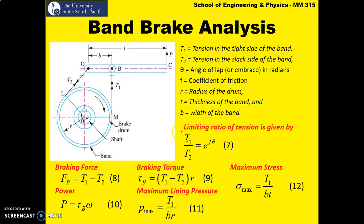Now let's look at the governing equations. The tension ratio T1 over T2 equals exponential F-theta, where F is the coefficient of friction and theta is the lap angle in radians. E is the exponential — not a parameter but the inverse of the natural log. The braking force is simply T1 minus T2. The torque is the braking force times the radius.